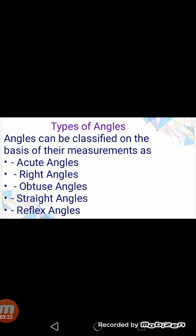Types of angles. I will explain five types of angles on the basis of their measurement. By using a protractor, angles can be classified on the basis of their measurement as: acute angle, right angle, obtuse angle, straight angle, and reflex angle.